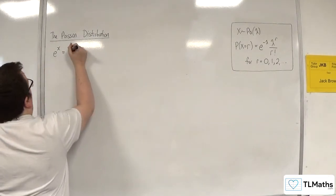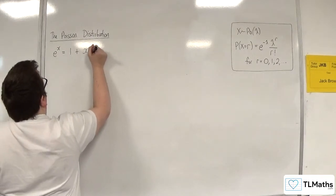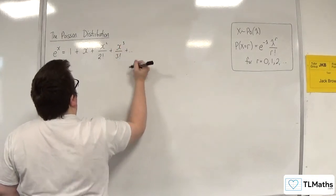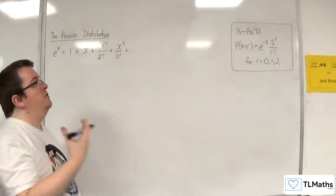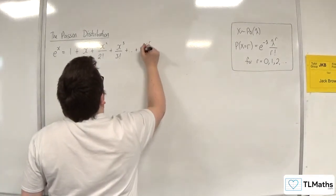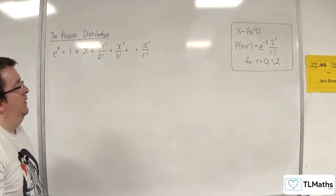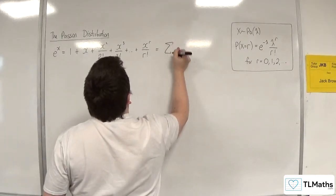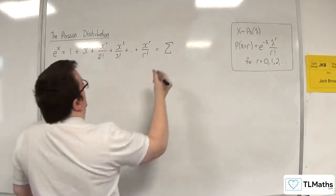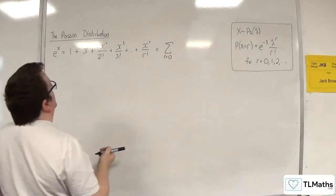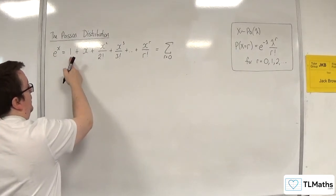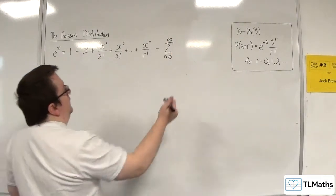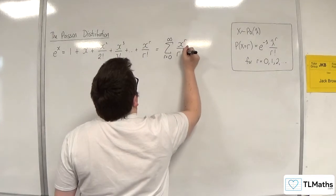So e to the x is equal to 1 plus x plus x squared over 2 factorial plus x cubed over 3 factorial plus x to the 4 over 4 factorial plus x to the 5 over 5 factorial — it keeps on going like that forever. We could write that as the sum from r equals 0 to infinity of x to the r over r factorial.